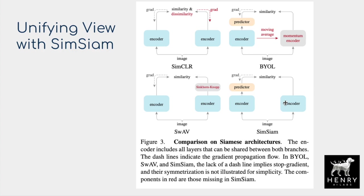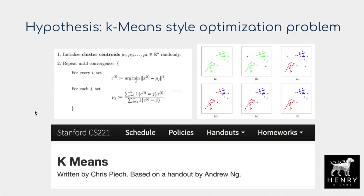Whereas the simple Siamese architecture performs better than all of these in their experiments, and it's much simpler. The authors provide an explanation for what's really happening in contrastive learning — the real optimization problem at hand — relating it to a k-means style optimization problem.